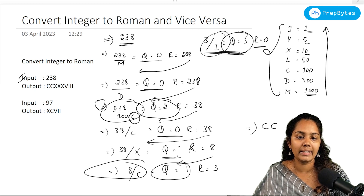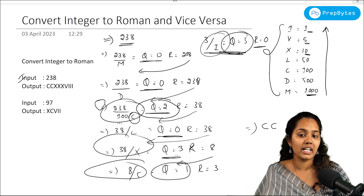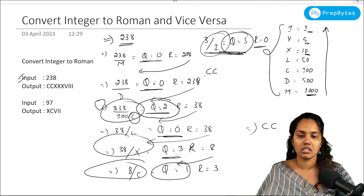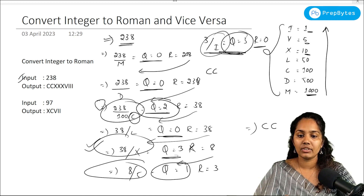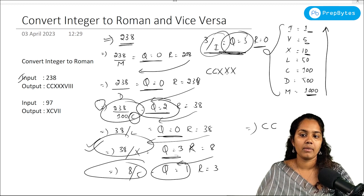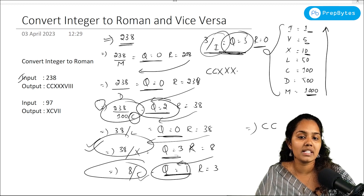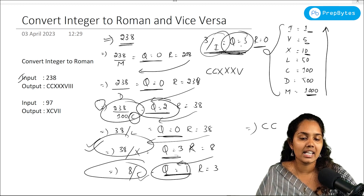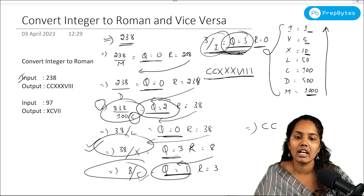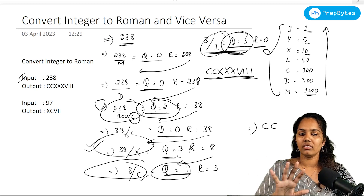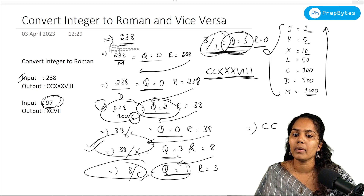Also, for 38 divided by X (10), the quotient is 3, so we write three X's. So putting it all together: quotient 2 when dividing by C means we write CC; quotient 3 when dividing by X means we write XXX; quotient 1 when dividing by V means we write V; and quotient 3 when dividing by I means we write III. So 238 in Roman numerals is CCXXXVIII.